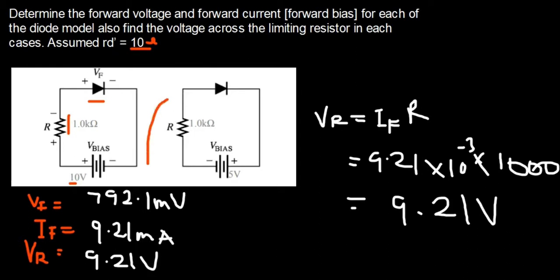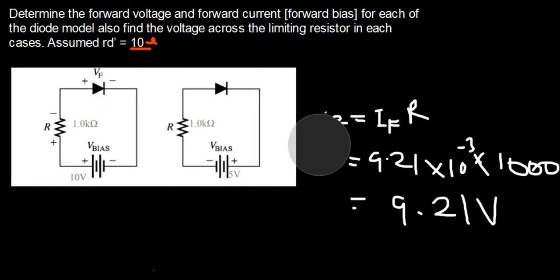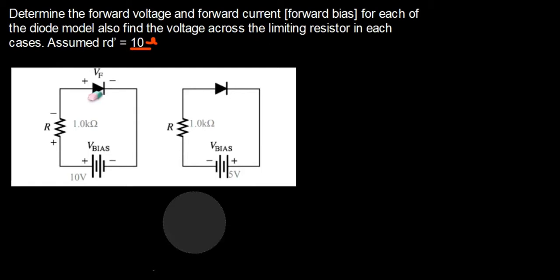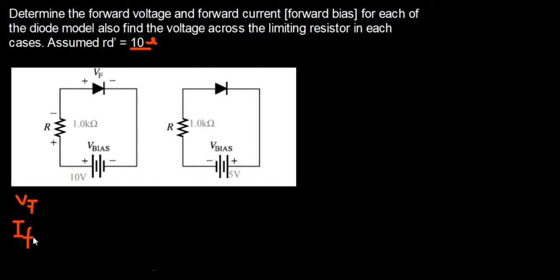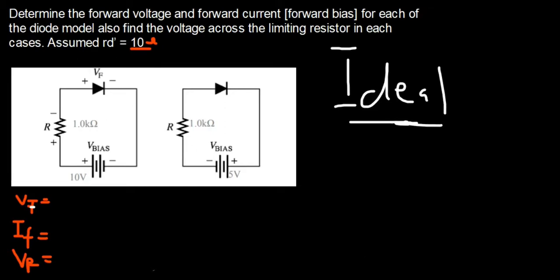Now we consider the second circuit, which is the reverse biased circuit. We need to find VF, IF, and VR for each diode model. For the ideal diode when reverse biased, no current flows through it. Since the diode is open, it will not allow current to pass through to get to the resistor.